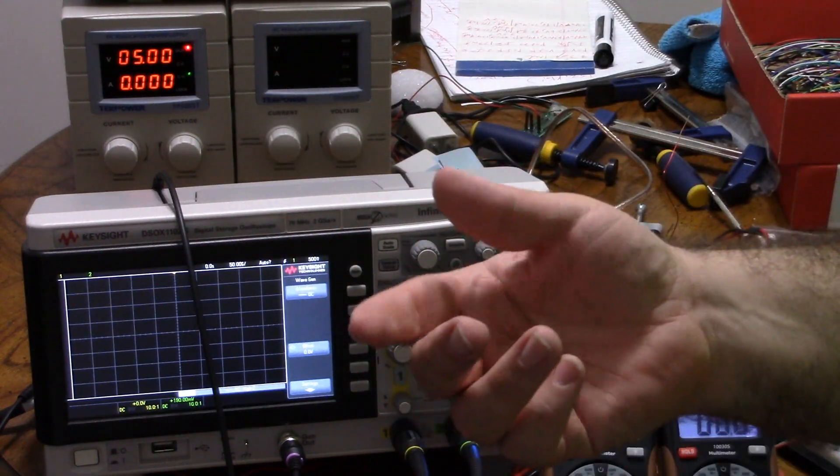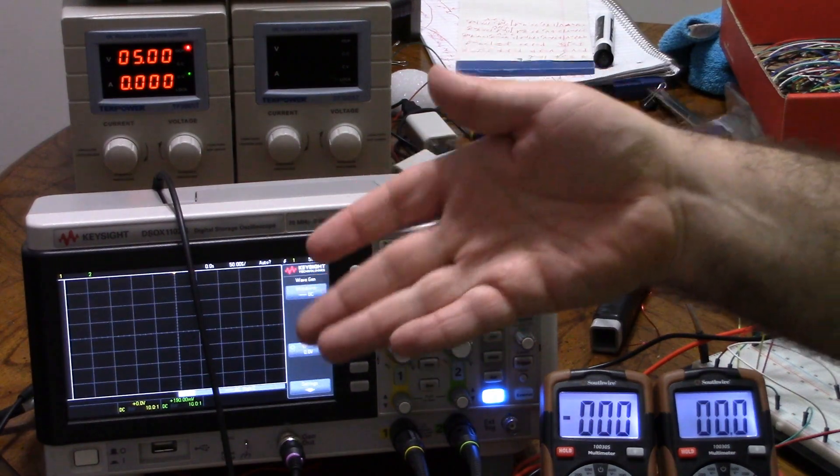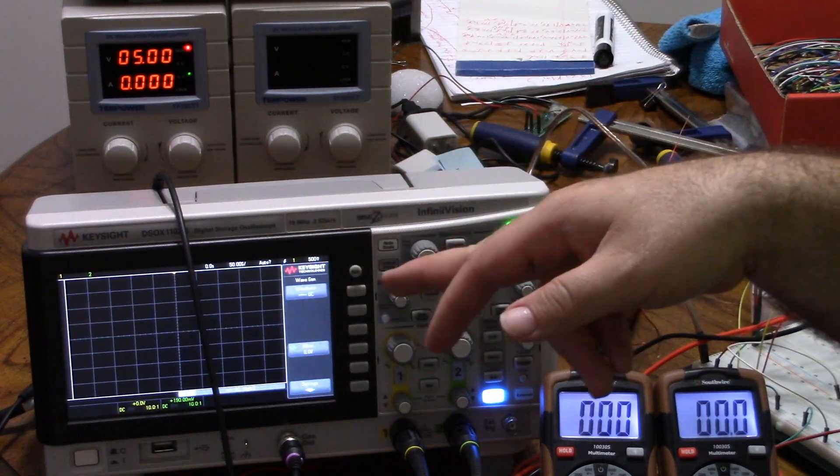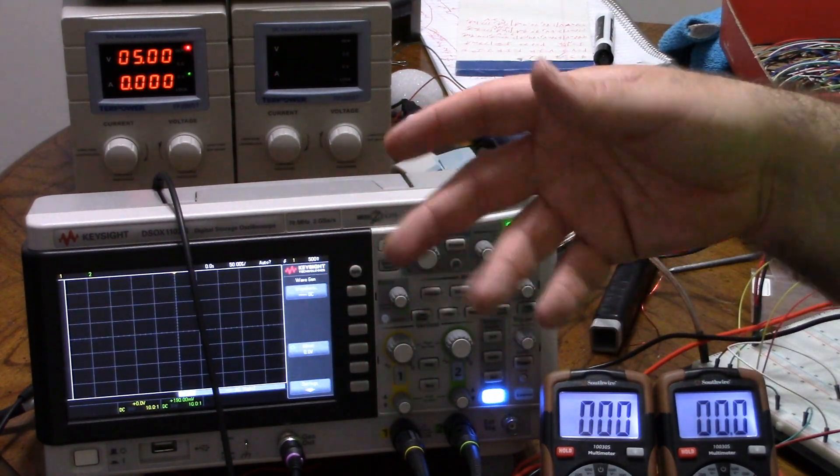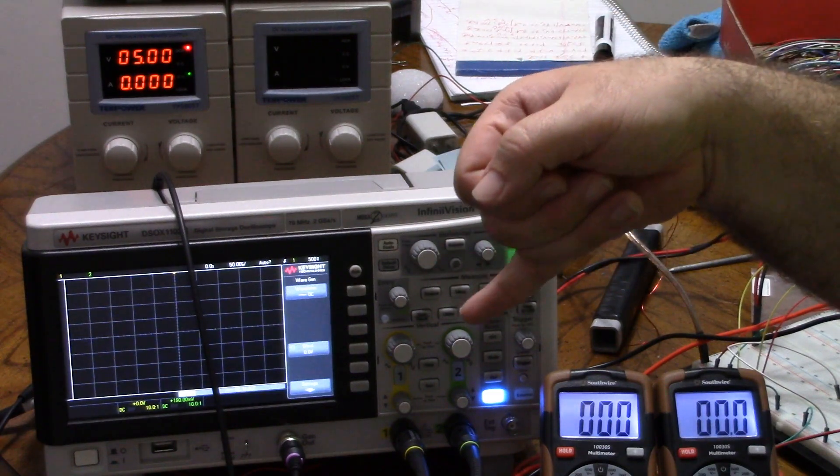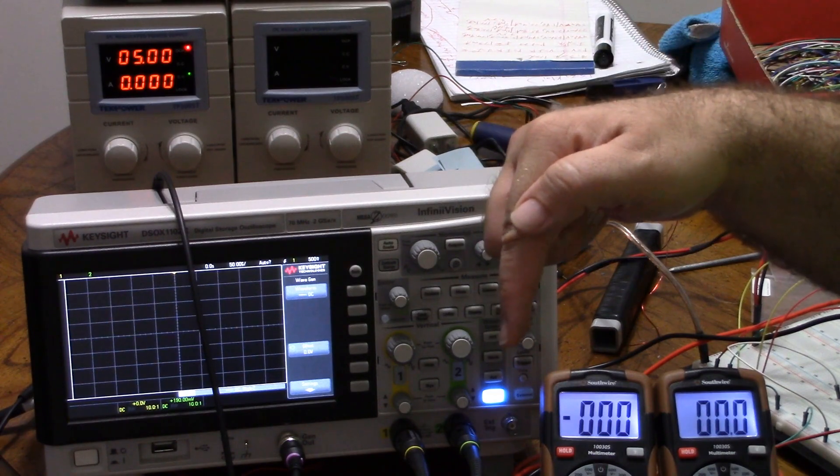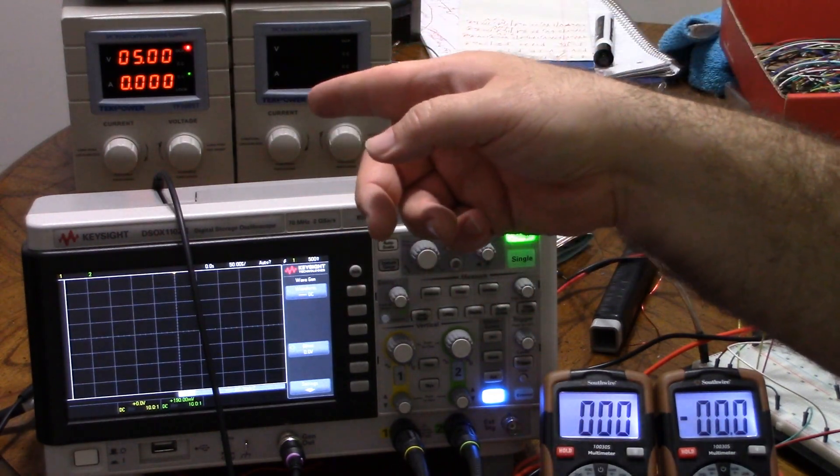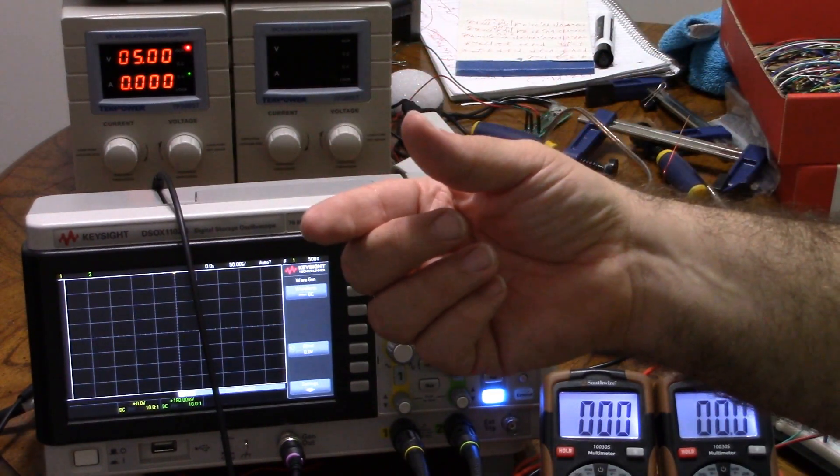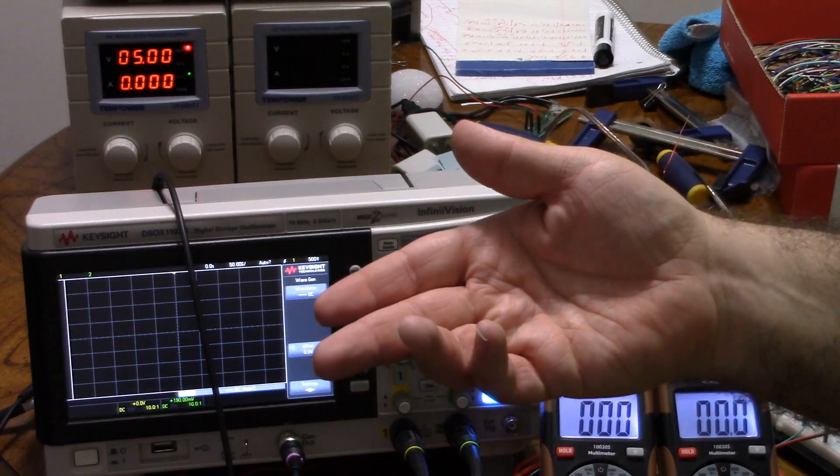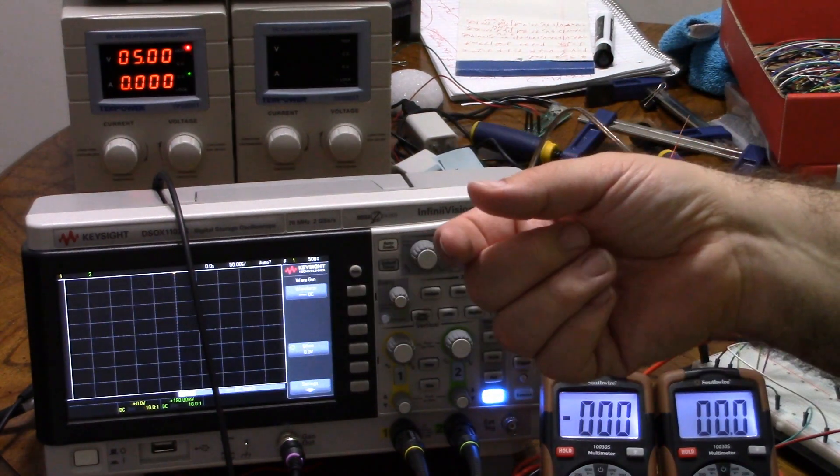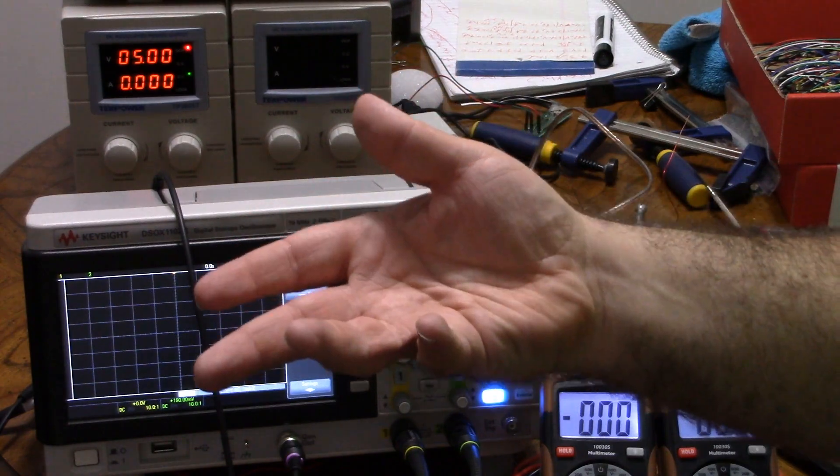Some cold water on my finger later. And this demonstrates very well the way Sziklai works. The way Darlington in general works. The NPN, which was being driven by the signal, was cold. The PNP, which was providing most of the 170-some milliamps, was definitely not. So, in this case, you would want to heatsink your PNP or, more likely, have a better transistor.